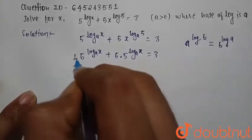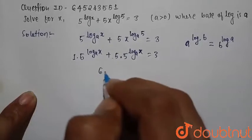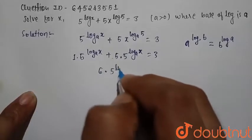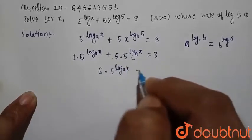Now 5 times 1 equals 5 plus 1 and it is 6 times 5 into log a x. This is equal to 3.